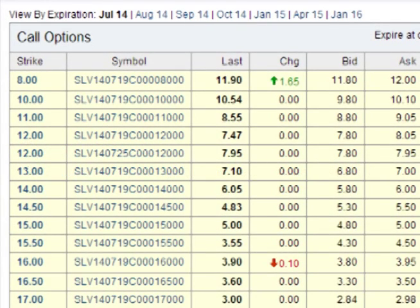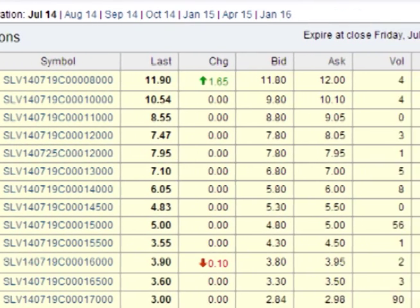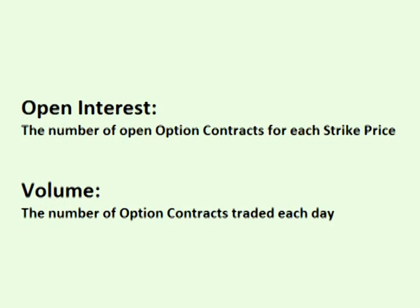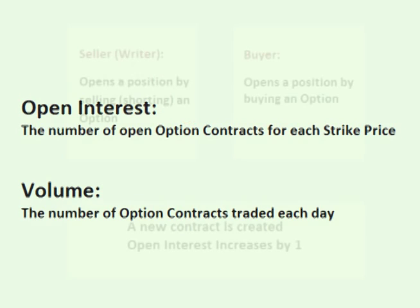Open Interest for each strike price is located right on the option chain, or price list of available options to buy and sell. Open Interest is often confused with volume. Volume is the number of contracts traded each day, whereas Open Interest is the number of contracts that are currently open.